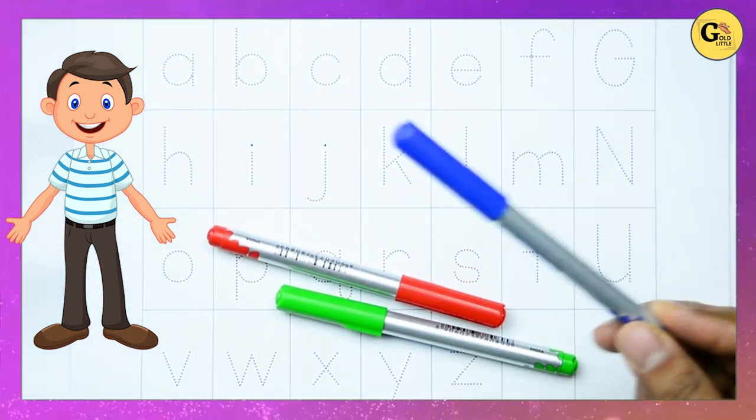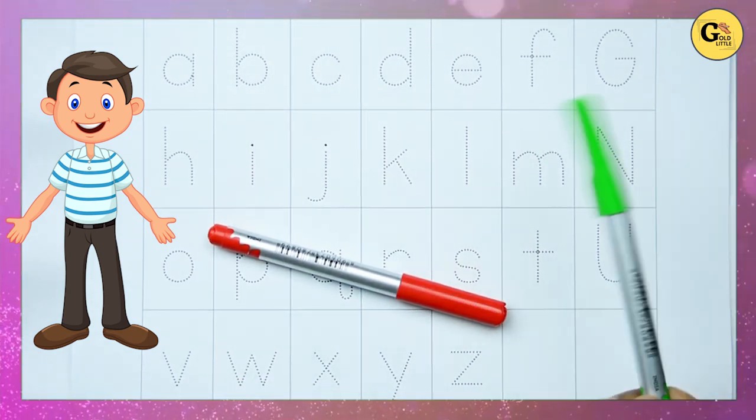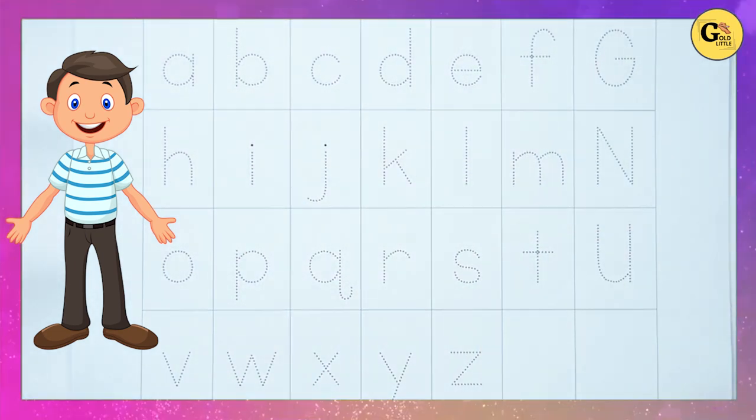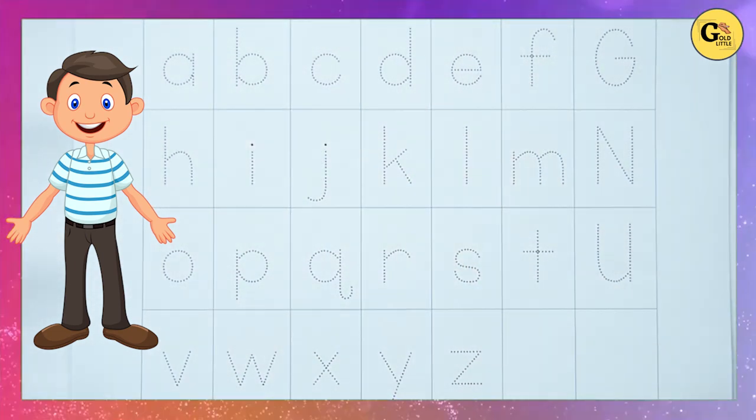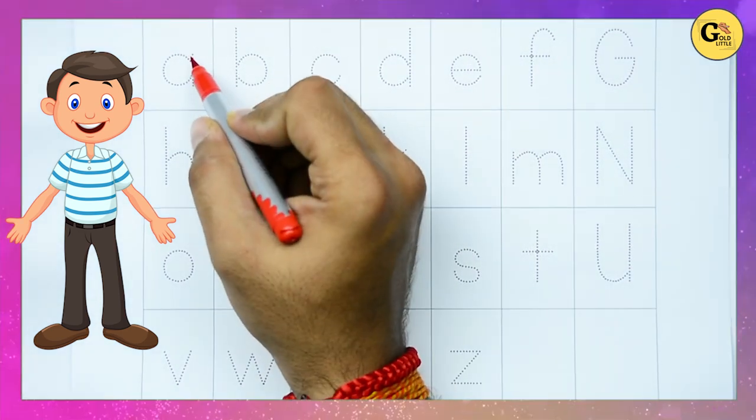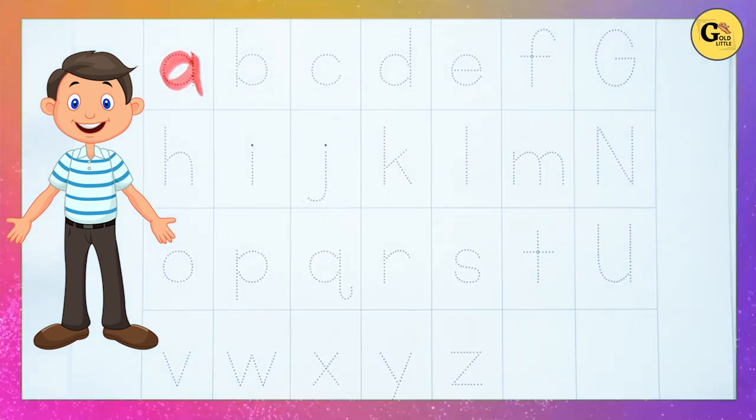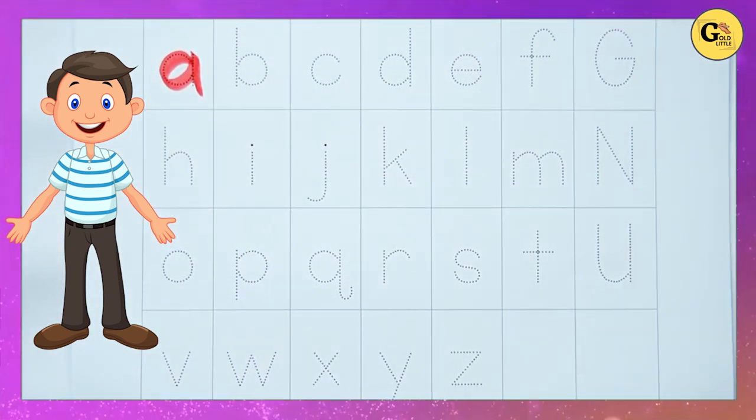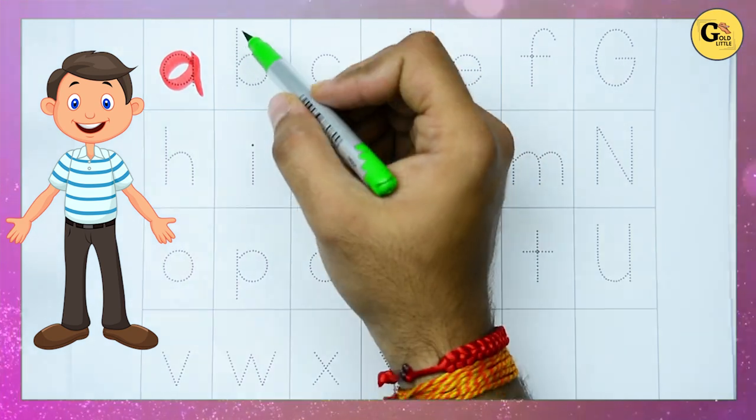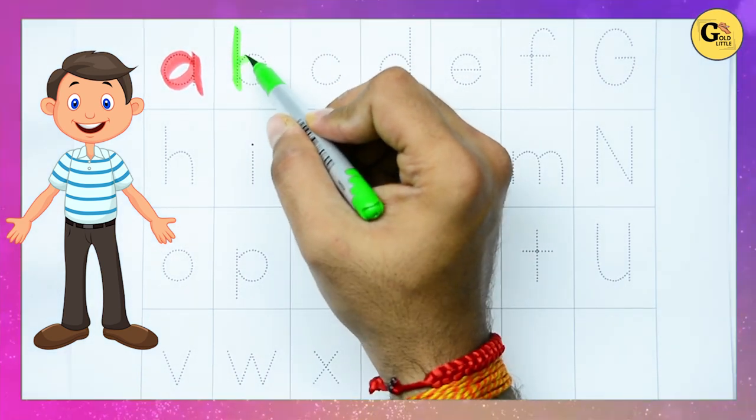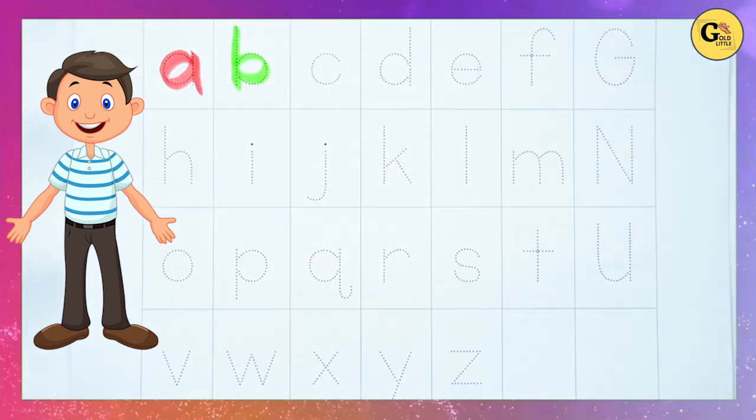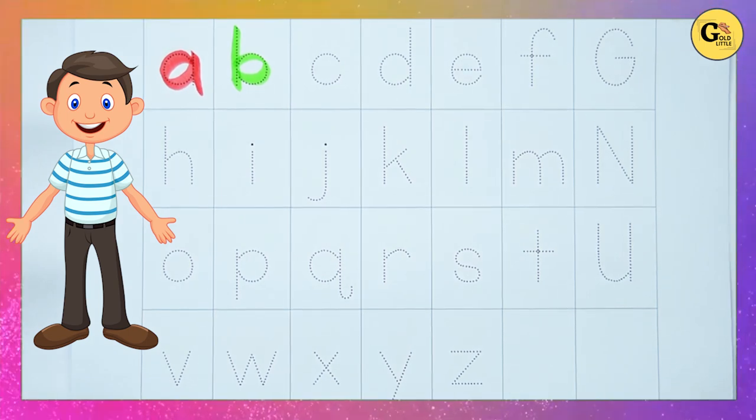It's blue color, green color, red color. Small a with red color. It's b, b with green color. It's b small b.